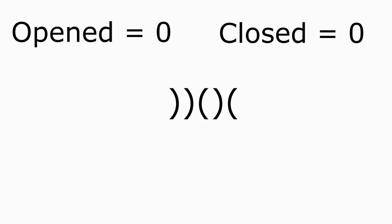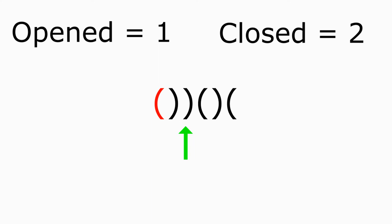Now let's start going through each character in the string. As we see in this case, we have one closed parenthesis but zero open — and at no point in time can we have closed parentheses outnumbering open parentheses. So we need to insert one open parenthesis before it. Now we have one open and one closed, meaning open is greater than or equal to closed.